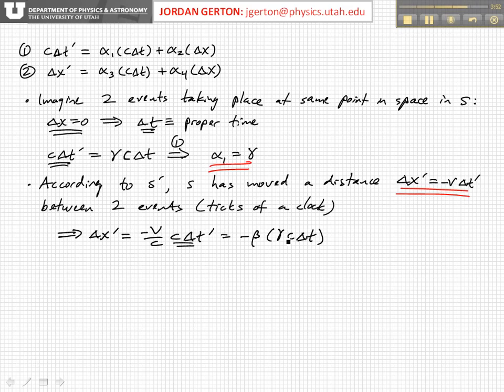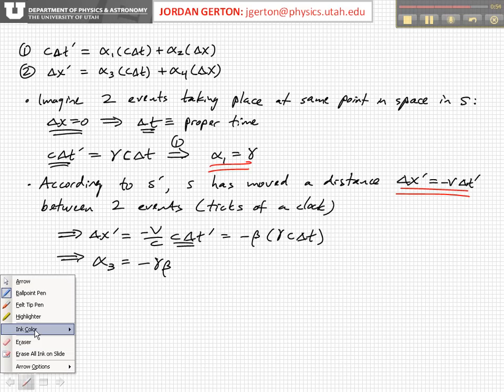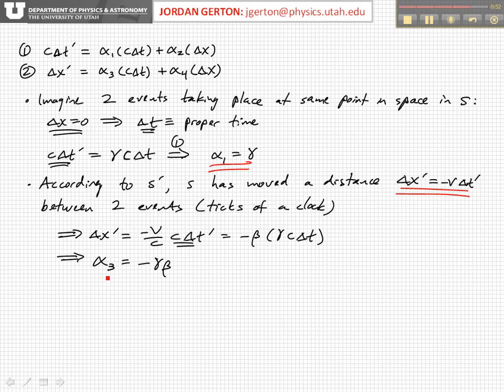And so it's time dilated. This allows us to conclude that alpha three is equal to minus gamma beta. So just by assuming that the events are, in one case, just ticks of a clock, I can get alpha one and alpha three, as I've shown.